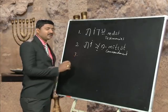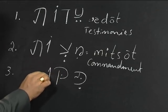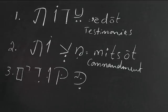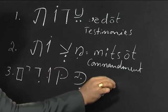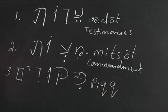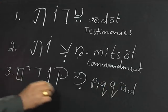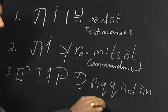And the third word that we have learned is Pikudim — Pe, Hirek, Qof (with dagesh, so double Q), Sureq, Dalet, Hiriq Yod, and final form of Mem. So it is Pikudim, which we have seen means the precepts of God.